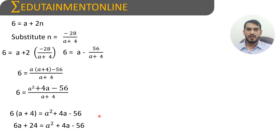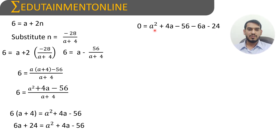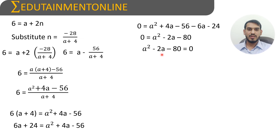Transposing all terms to one side: 0 equals a squared plus 4a minus 56 minus 6a minus 24. Combining like terms: 4a minus 6a is minus 2a, and minus 56 minus 24 is minus 80. So we have the quadratic equation a squared minus 2a minus 80 equals 0.